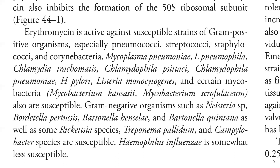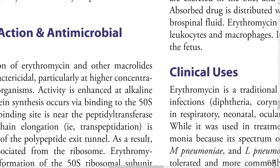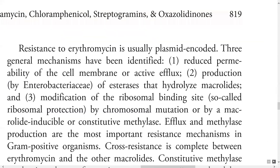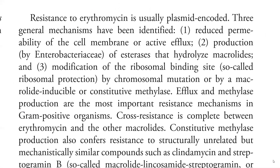Gram-negative organisms including Neisseria species, Bordetella pertussis, Bordetella bronchiseptica, Bordetella quintana, as well as some Rickettsia species, Treponema pallidum, and Campylobacter species are susceptible. Haemophilus influenzae is somewhat less susceptible. These are all the organisms which have susceptibility towards erythromycin. Now let's talk about resistance mechanisms.